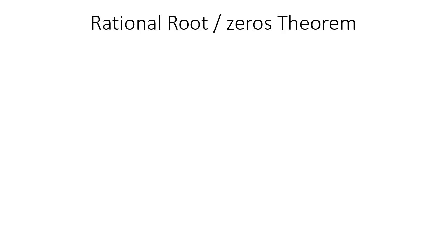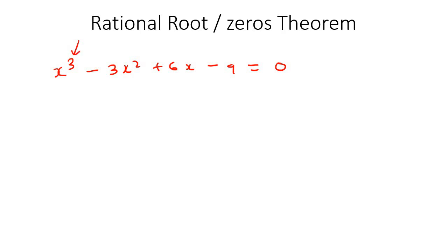In this lesson, we're going to talk about the rational root theorem. So let's say, for example, we had an equation like x³ minus 3x² plus 6x minus 9 equals 0. According to the fundamental theorem of algebra, this equation should have three answers.